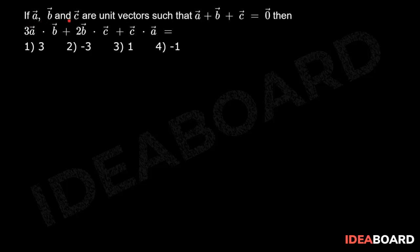If a bar, b bar, and c bar are unit vectors such that a bar plus b bar plus c bar equals 0 bar, then 3 a bar dot b bar plus 2 b bar dot c bar plus c bar dot a bar equals 2.